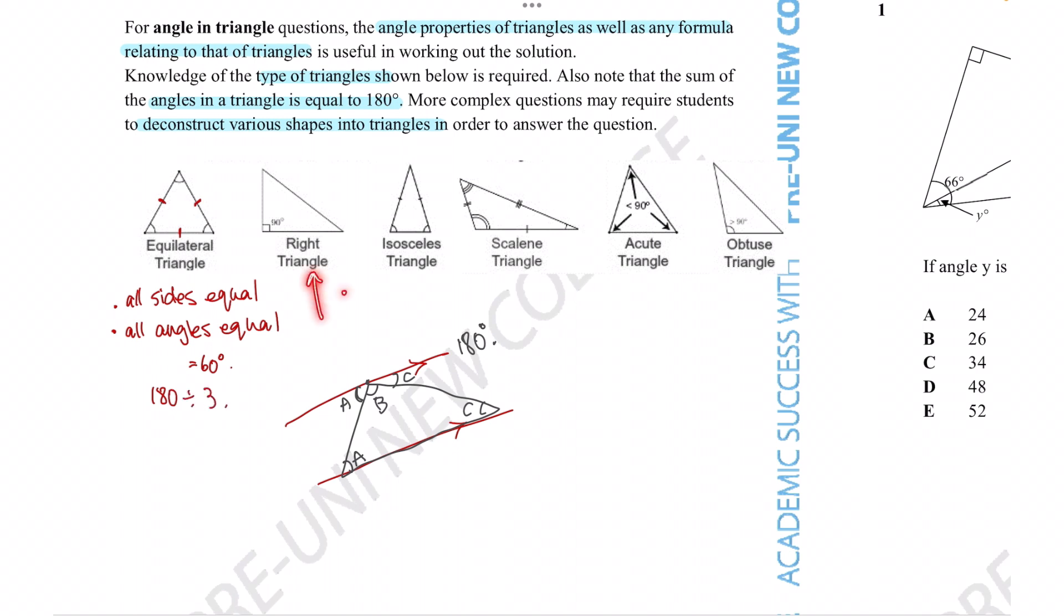As for right angle triangles, these refer to triangles that have this little right angle in one of its three corners. So that would be one thing to note for.